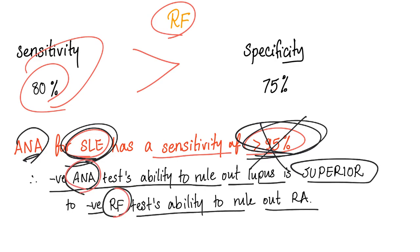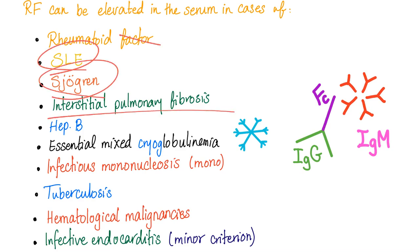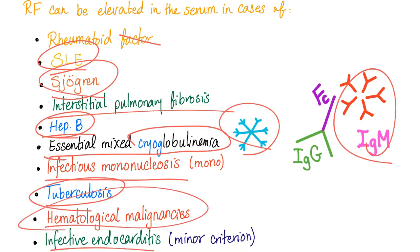Rheumatoid factor is very non-specific because it can be elevated in many diseases. Rheumatoid factor can be positive in rheumatoid arthritis, systemic lupus erythematosus, Sjögren's syndrome, interstitial pulmonary fibrosis, hepatitis B, essential mixed cryoglobulinemia, infectious mononucleosis, tuberculosis, hematological malignancies, and infective endocarditis — where it is one of the minor Duke's criteria.